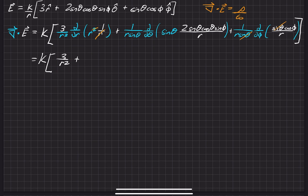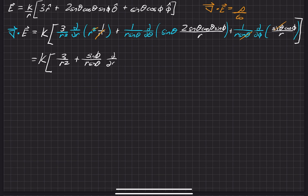This is a partial with respect to phi and theta here. So we can go ahead and pull out the sine phi, giving us sine phi over one over sine theta. We'll leave the partial with respect to theta right here. Since this is a partial with respect to theta, we can pull this one over R out, turning it into one over R squared.